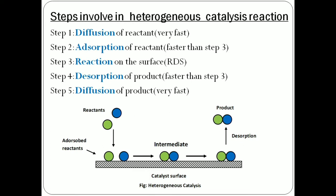In step 4, desorption of product from the surface. The intermediate formed in step 3 now desorbs from the surface and again becomes available for adsorption. In step 5, diffusion of product away from the surface — the intermediate now finally disintegrates to form the product.